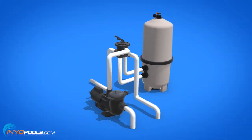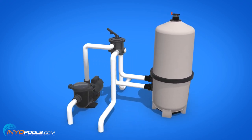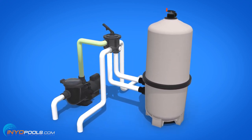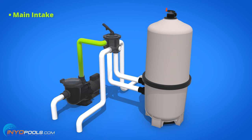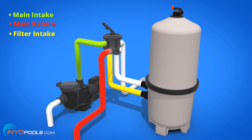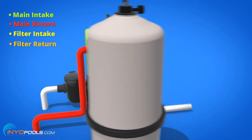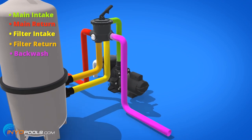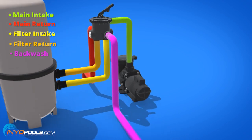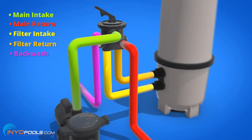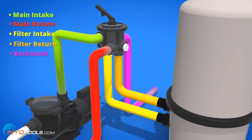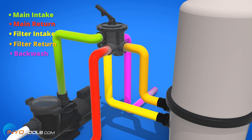A universal or side-mount multi-port valve needs five points of connection in order to function properly: the main intake port receiving water from the pump, the main return port sending water back to the pool, the port that feeds water to the filter intake, the port that receives water from the filter return, and the backwash port for discharging wastewater from the filter. Some valves come with extra ports that are plugged, and the position of these plugs can be swapped out with their corresponding ports to accommodate different install configurations.